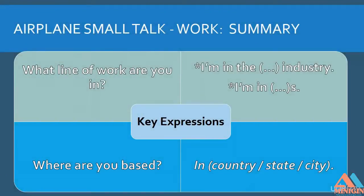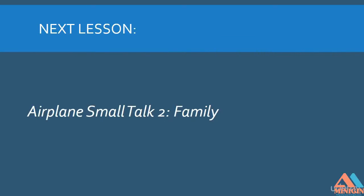Some key expressions for making small talk on an airplane about work: 'What line of work are you in?' 'I'm in the education industry.' 'I'm in the semiconductor industry.' Or simply: 'I'm in semiconductors.' 'I'm in construction.' Key expression for location: 'Where are you based?' — 'In South Korea,' 'in Texas,' 'in New York City.' In the next lesson, we're going to continue with airplane small talk and look at talking about your family. Goodbye.